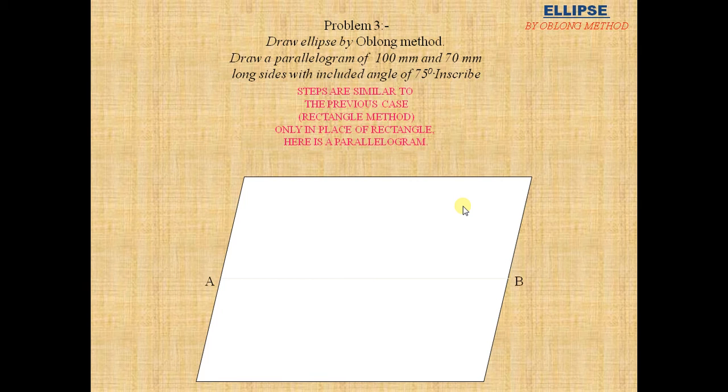Now draw perpendicular bisectors A, B, and C as before we used. Divide the A side, the left side of the parallelogram, into 4 equal parts.